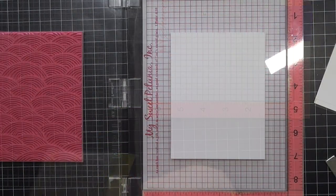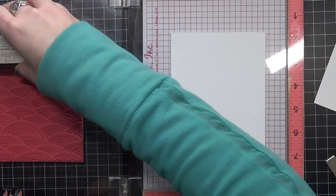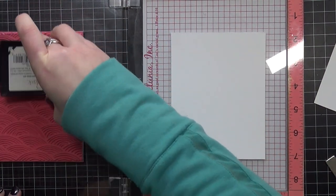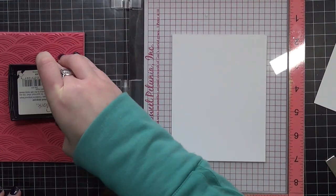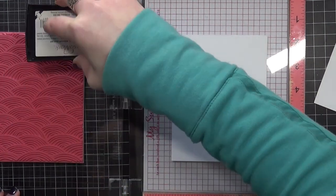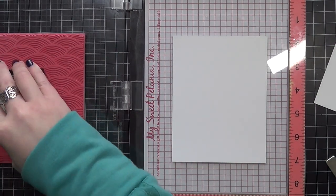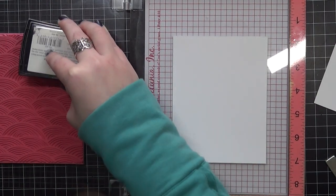I'm going to take this rainbow waves background from Tailored Expressions. All their backgrounds are red rubber and I love that because you usually can get a really great impression that way. So I'm going to ink up my stamp, and I placed it already in my MISTI as you can see. I'm going to ink it up with my VersaMark ink.